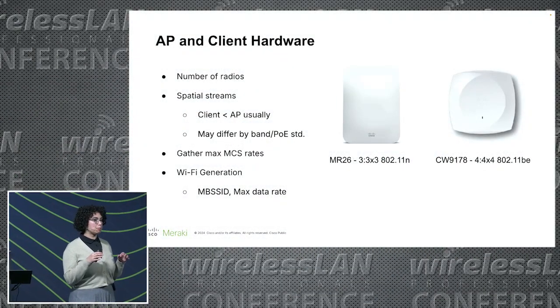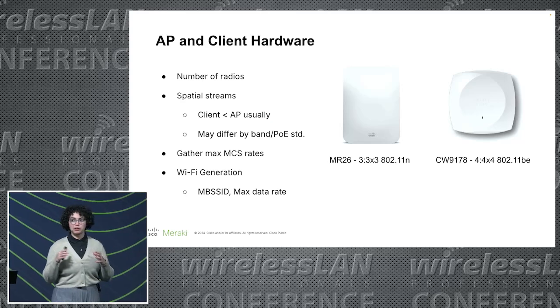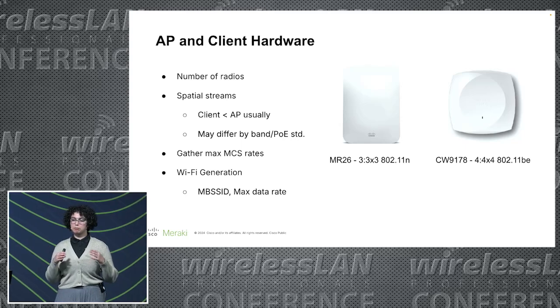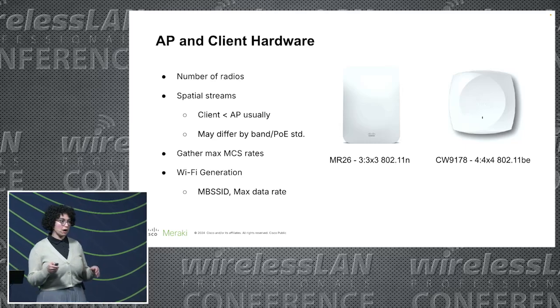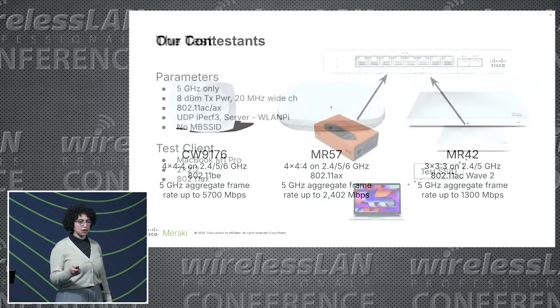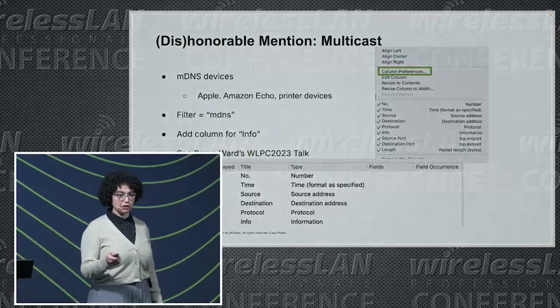One additional thing to mention about hardware capabilities: the size of the radio and the spatial streams may differ per channel and band, so check the data sheet. For example, some vendors restrict radio capabilities based on PoE levels. When collecting data for your APs and clients, definitely check your data sheets and understand the realistic limitations you may encounter based on PoE, software version, and so on. With that, that's all I had.